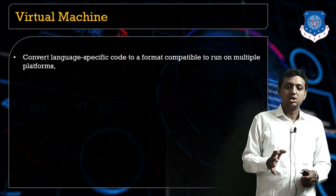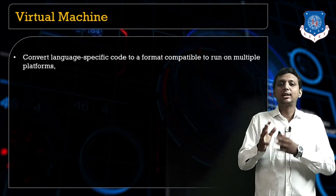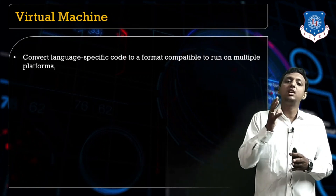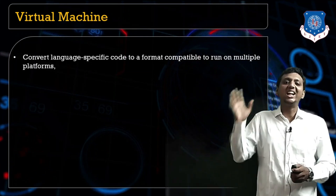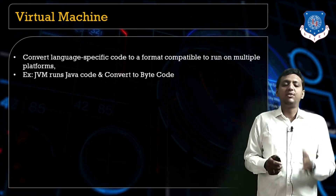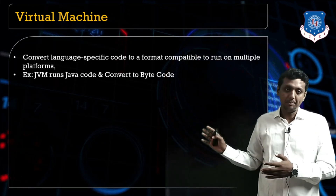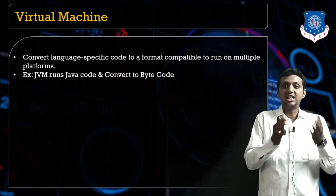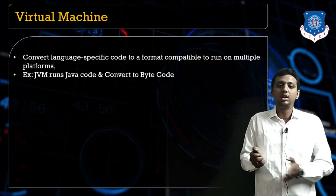When we talk about the virtual machine, it just converts a language-specific code to compatible language code, or compatible executable file code, on multiple platforms so that you can run your application on any platform. The JVM runs and converts the Java file to the class file and the class file to the byte code.